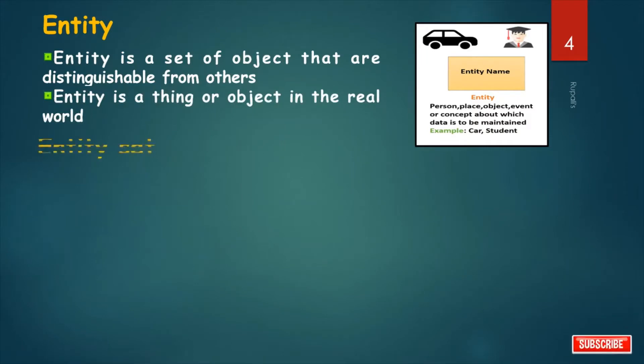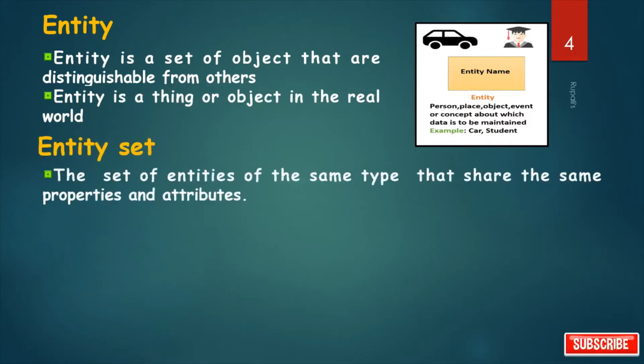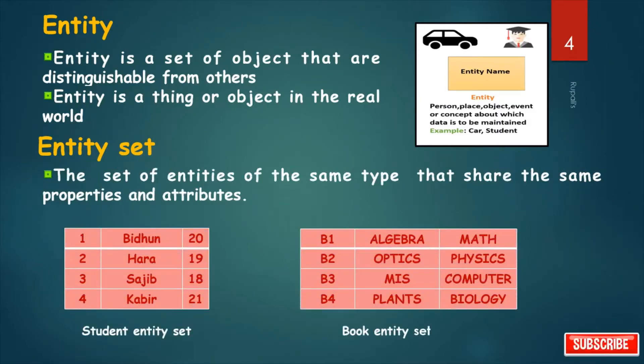So what is Entity Set? The set of entities of the same type that share the same properties and attributes like Student Entity Set, Book Entity Set, etc.